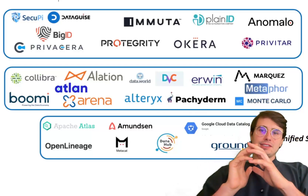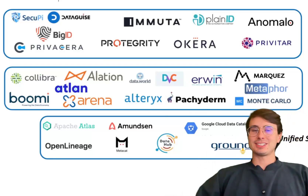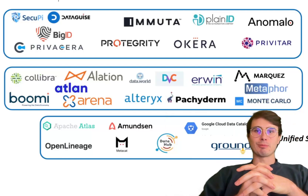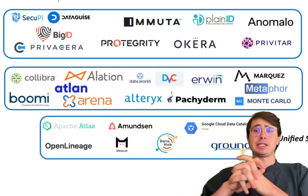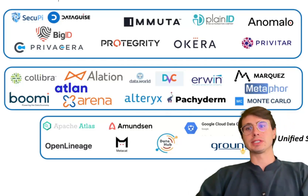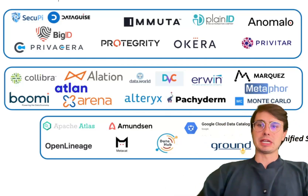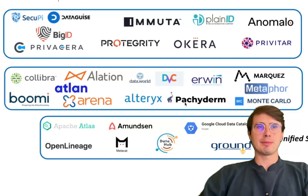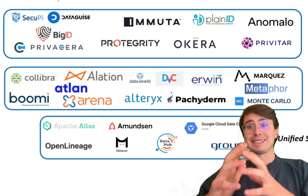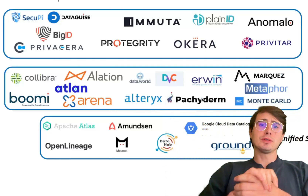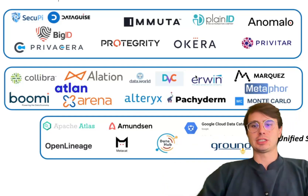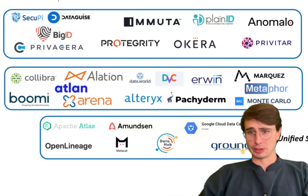Hey y'all, Data Guy here. And today, with the rise of the metadata landscape and data lineage becoming more and more prevalent in production — no longer just a science experiment in how you're tracking changes to your data over time — I wanted to make a video quickly comparing and contrasting some of the top data cataloging tools for cataloging and maintaining your data lineage, so you have an idea of what the landscape looks like and what options are available as you begin to implement data lineage in your own use case.